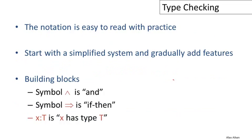If you haven't seen this notation before, it will be unfamiliar, but it's quite easy to read with practice. We'll start with a simple system and gradually add features. We'll use logical conjunction for the English word 'and' and implication for 'if-then.' The string x:T is read that x has type T. This is a logical assertion saying that x has a particular type.